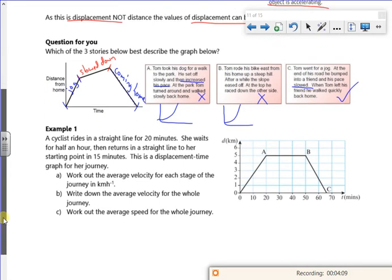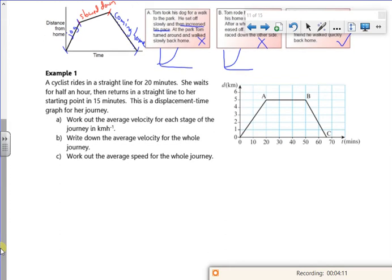Let's have a go of this one then. Right. So it says a cyclist rides in a straight line for 20 minutes. So that's the first 20 here. She then waits for half an hour. So if you look, the displacement hasn't changed. So I've got on my bike, and I've ridden for five kilometers, then I've sat there and had a break. And then it says I've come back. And it takes me 15 minutes to come back.